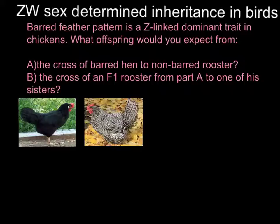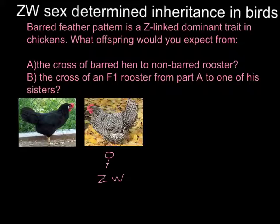Here's the solution to this problem. On the right we see a hen whose feathers are barred. A hen in birds is always ZW. This means that sex is determined by the females and not by the males, like in mammals, like in humans.